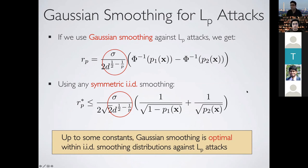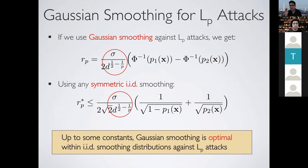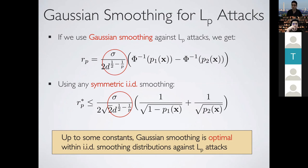A question was raised about whether the upper bound rho-star is provably tight. The answer: in the Gaussian case the bound is realizable — there exists a classifier achieving that robustness radius. For the general bound it is an upper bound; you might get a tighter one, but probably not much tighter, since the Gaussian bound is realizable and the two bounds asymptotically behave the same.